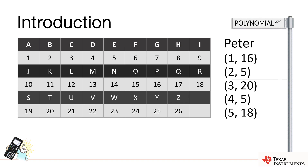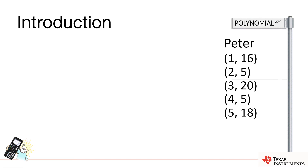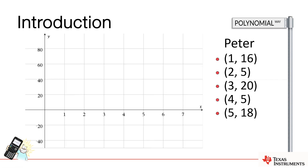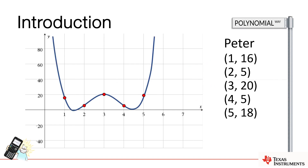Now I've got all the points that my polynomial needs to pass through. All we need to do is think about what sort of equation that might look like. Let's start plotting some points — the polynomial will probably look something like this. I don't know what degree that is off the top of my head.